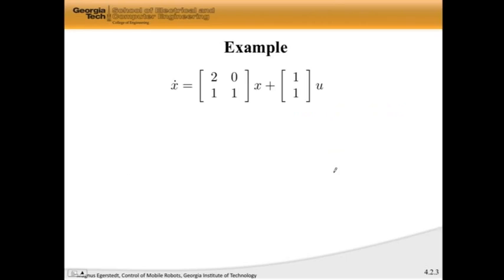Let's do some examples. Here is ẋ = Ax + Bu with two arbitrary A and B matrices. We're going to pick a K.